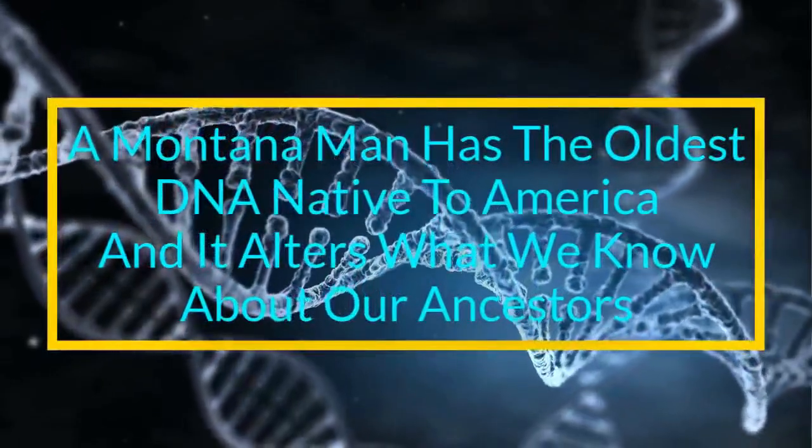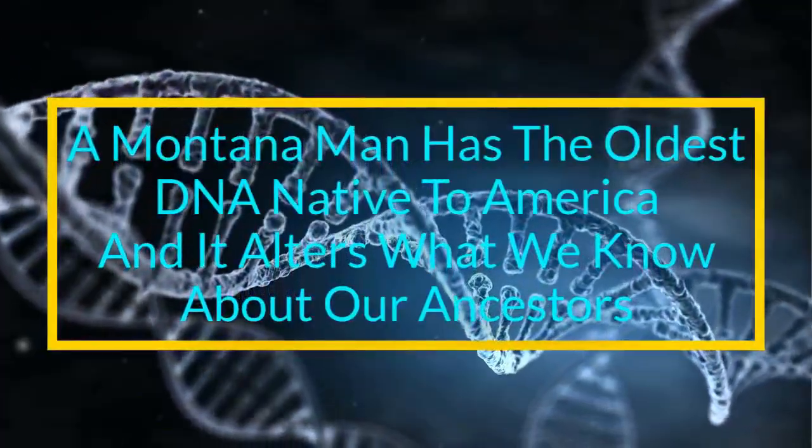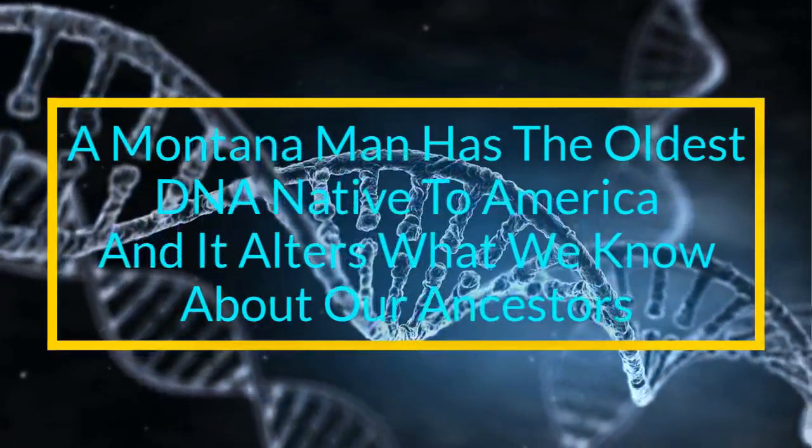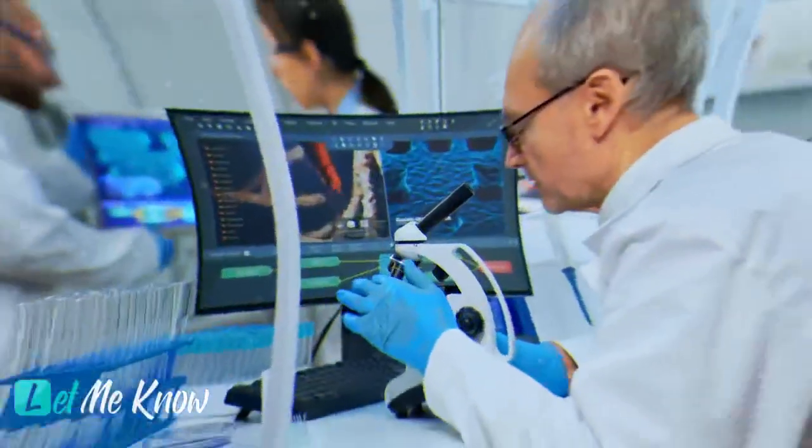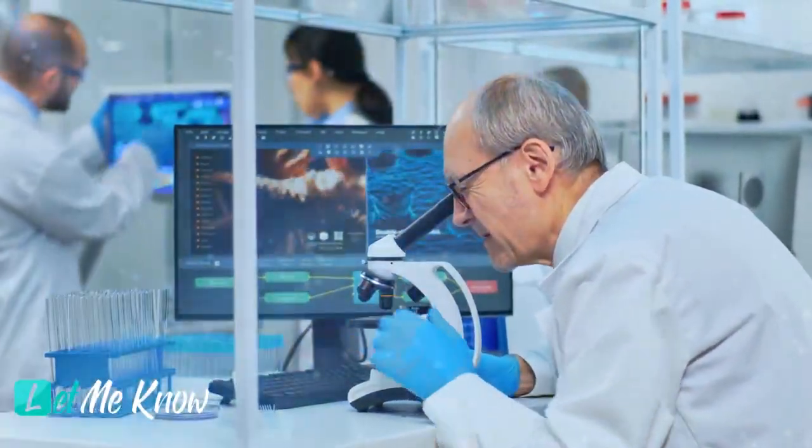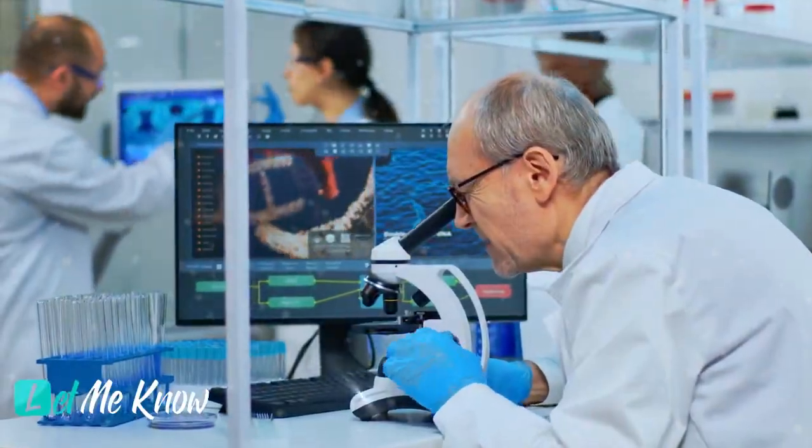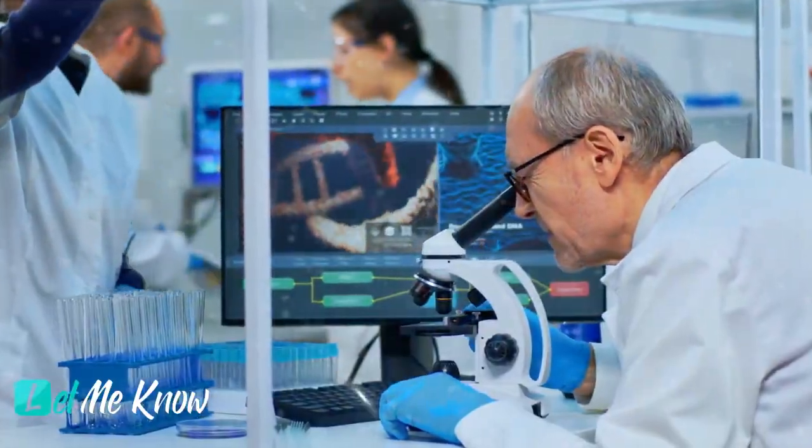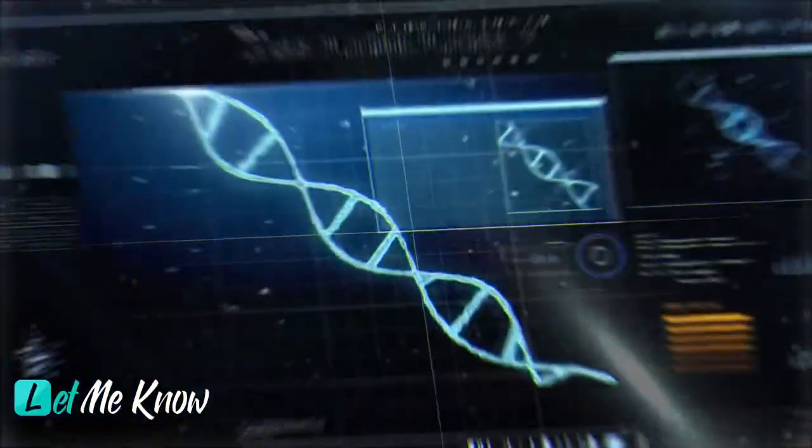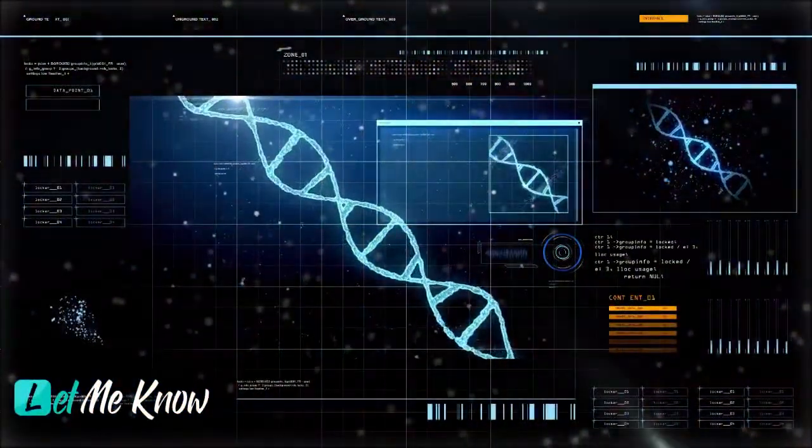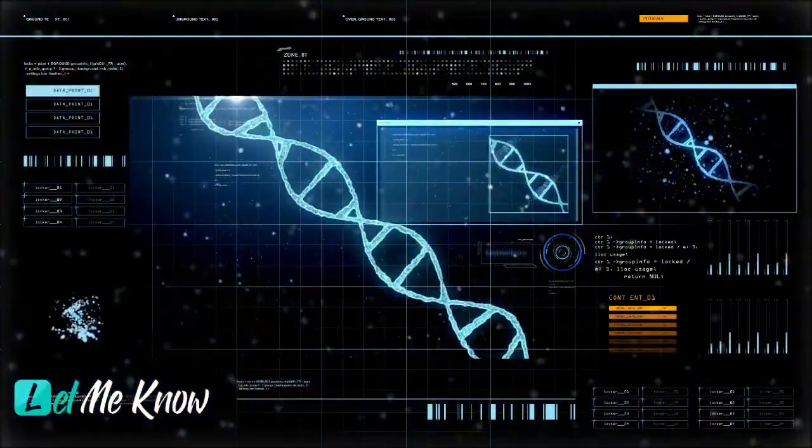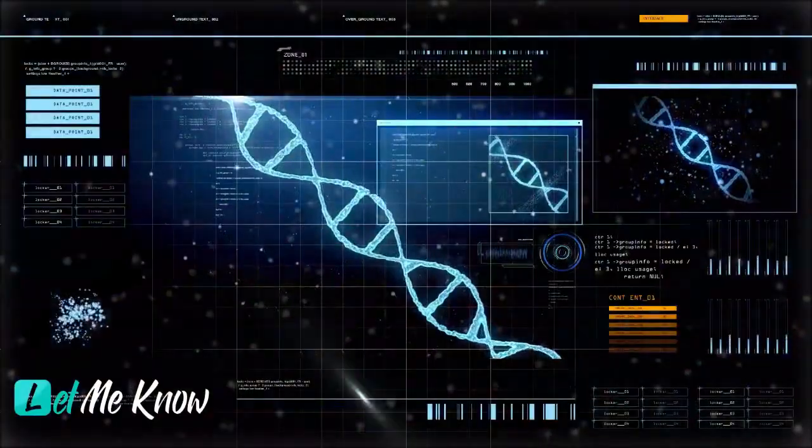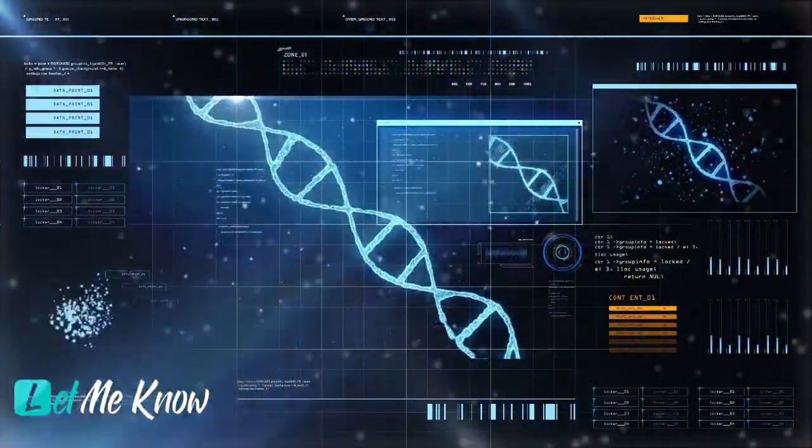A Montana man has the oldest DNA native to America and it alters what we know about our ancestors. Daryl Dusty Crawford, whose Native American Blackfoot name is Lone Bull, looks over his results with fascination. He had taken a DNA test with an outfit called Cellular Research Institute and learned much about his heritage. What he doesn't know yet is that the conclusions will also have implications for all Native Americans.